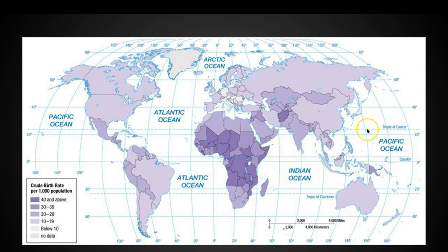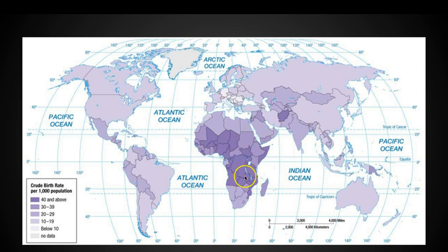Looking at the crude birth rate, as geographers we try to understand why people are having lots of babies. Why aren't babies being born in the United States? Why are tons of babies being born in Sub-Saharan Africa? By the way, we say sub-Saharan because the Sahara desert is right here and everything below that is sub.